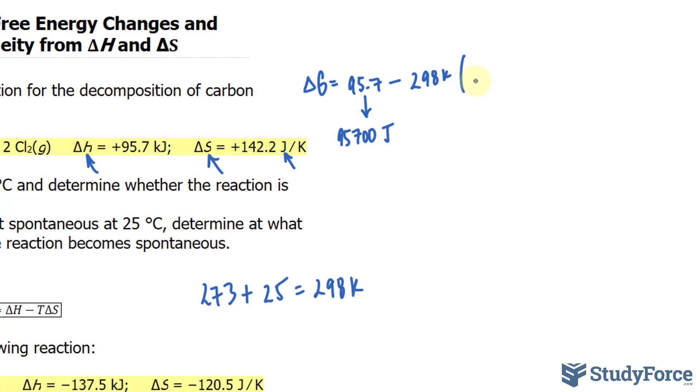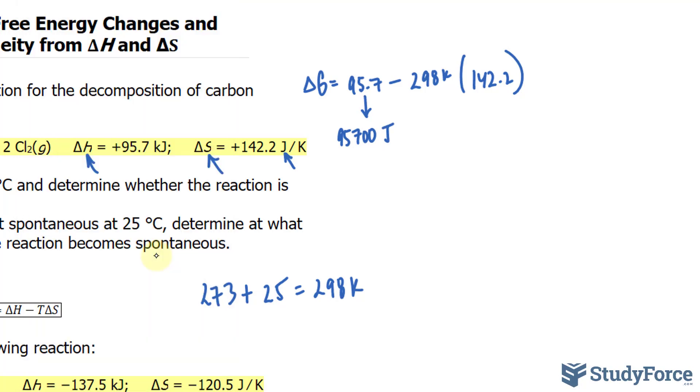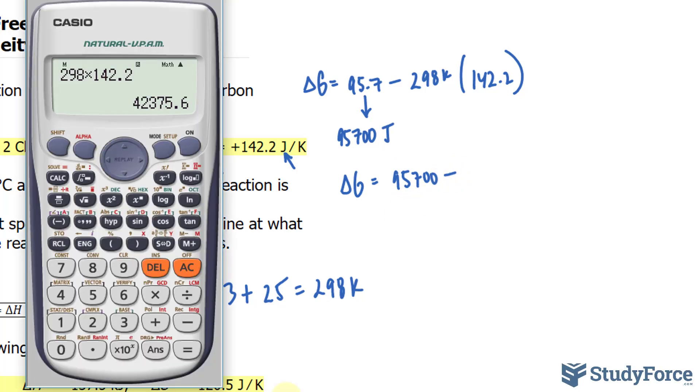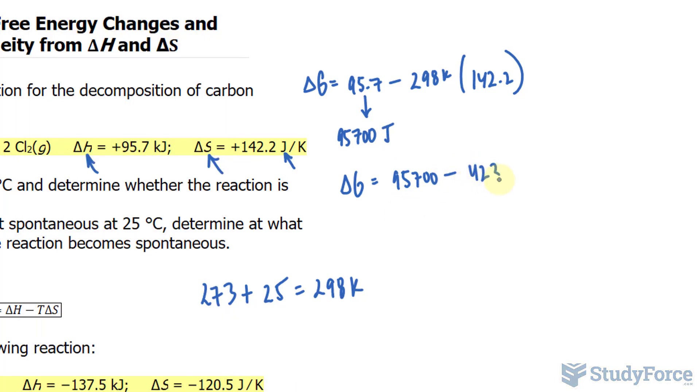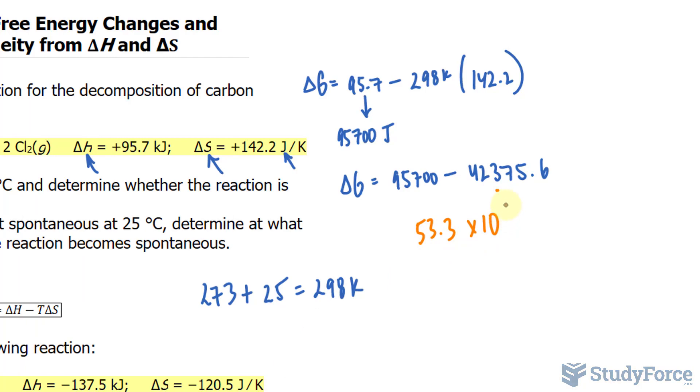142.2. Let's use our calculator. Starting with 298 times 142.2, we have delta G is equal to 95,700 minus this number, 42375, 42375.6, so we have 95700 minus the answer, 53.3, 53.3 times 10 raised to the power of 3. Notice that this number is positive, and as mentioned earlier, if it's negative, then it's spontaneous, and if it's positive, it's not. So this is not spontaneous.